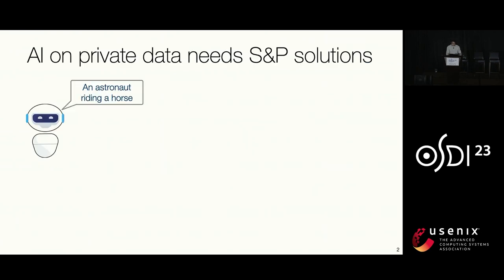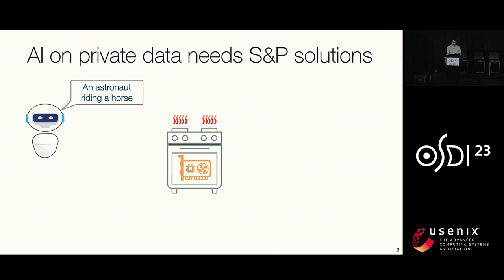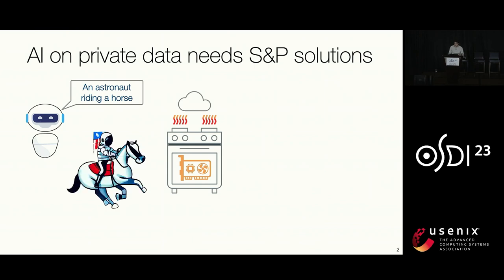Today's AI applications are very powerful. Say you want an image of an astronaut riding a horse. You talk to the AI, spin up a machine with possibly multiple GPUs on the cloud, run the large AI model for a couple of minutes, and you get an image like this — this is a real image from Stable Diffusion. AI is pretty powerful today.